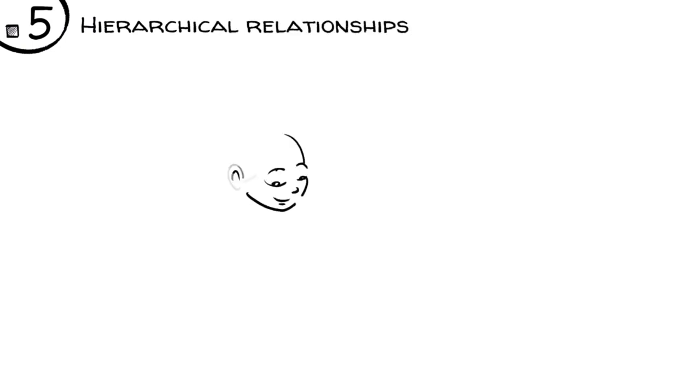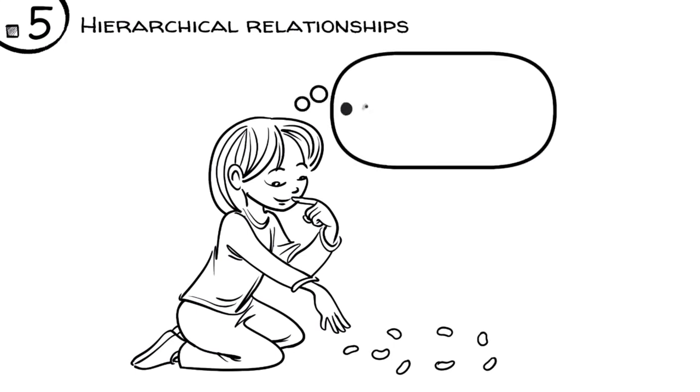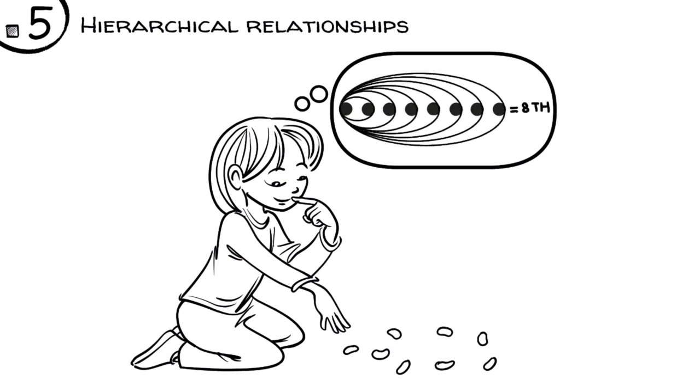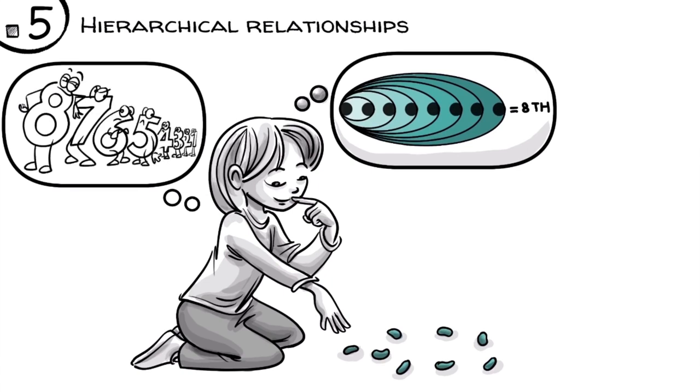Hierarchical relationships. As children construct order, they count the objects as follows: one, two, three, four, five, six, seven, and eight. As they do that, the number eight represents the eighth place in the order. In other words, eight always includes one, two, three, four, five, six, seven. The idea of eight is therefore a hierarchical relationship between the eighth object and all those preceding it.